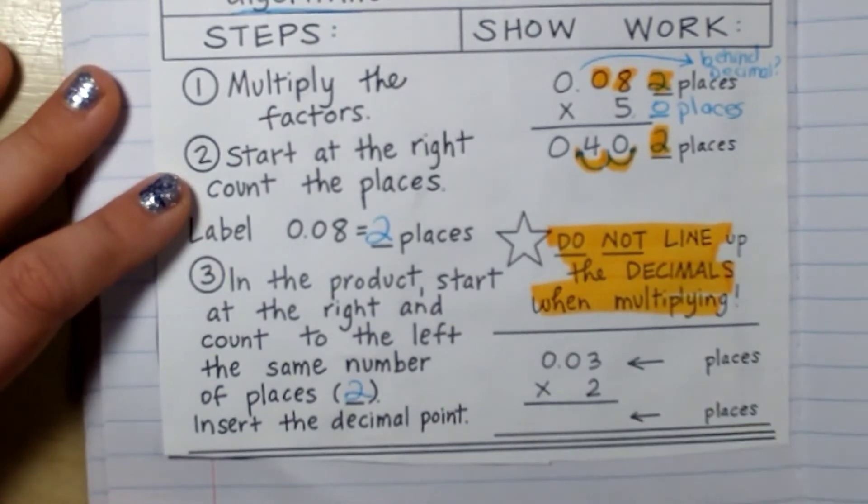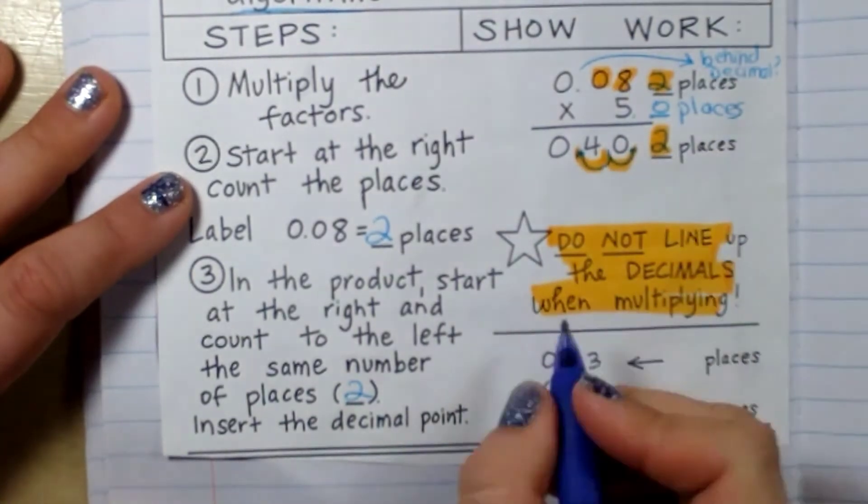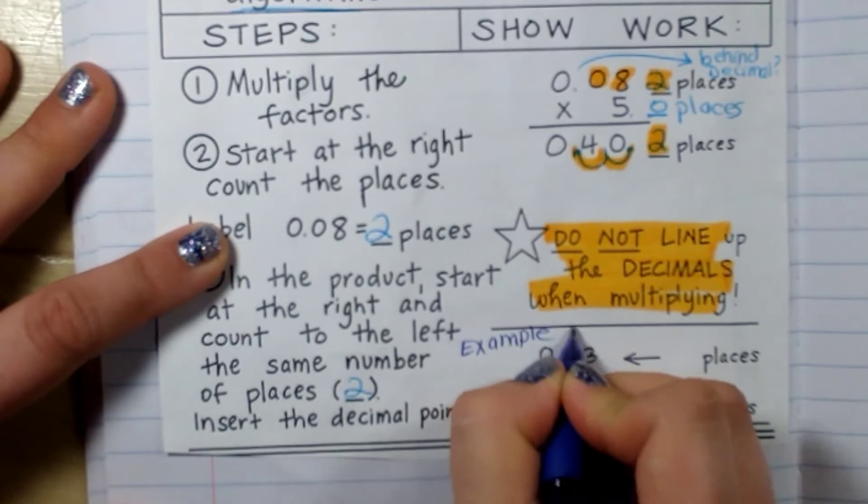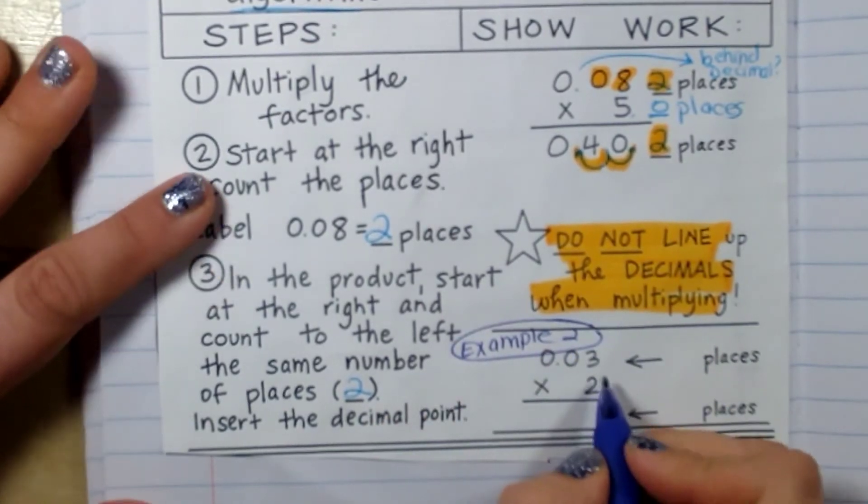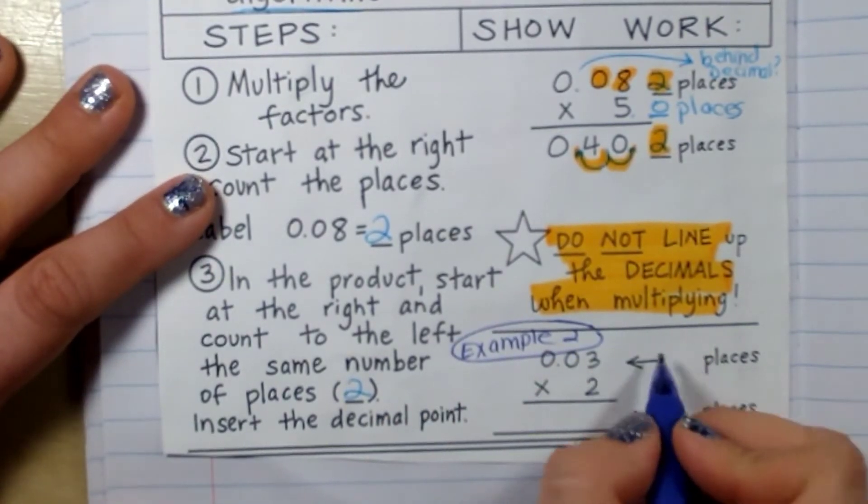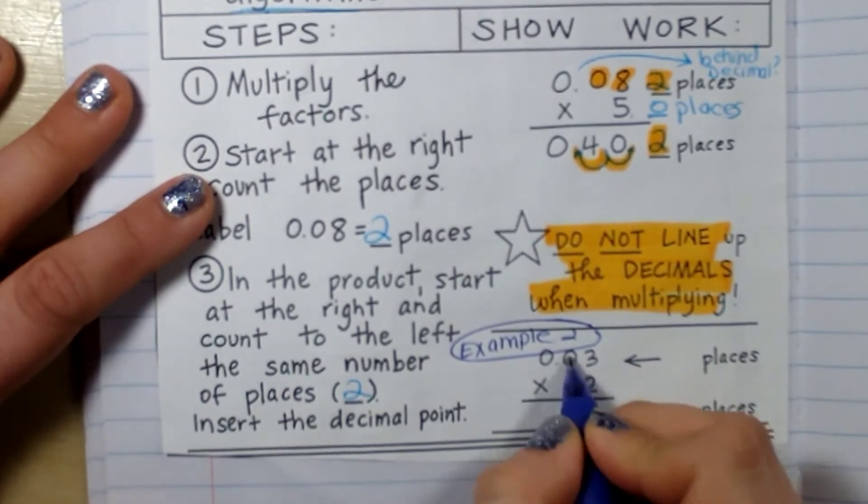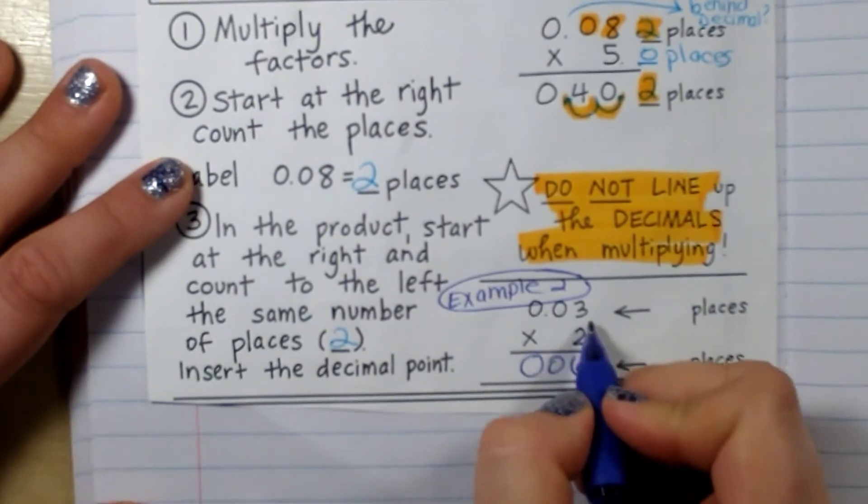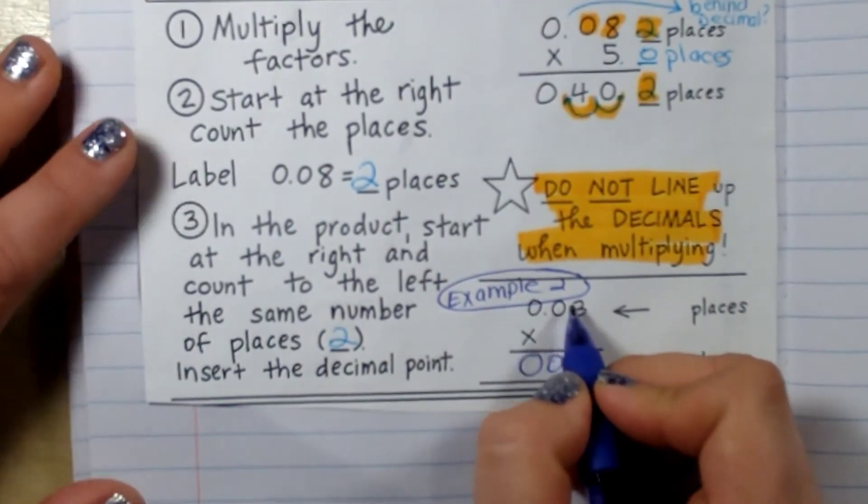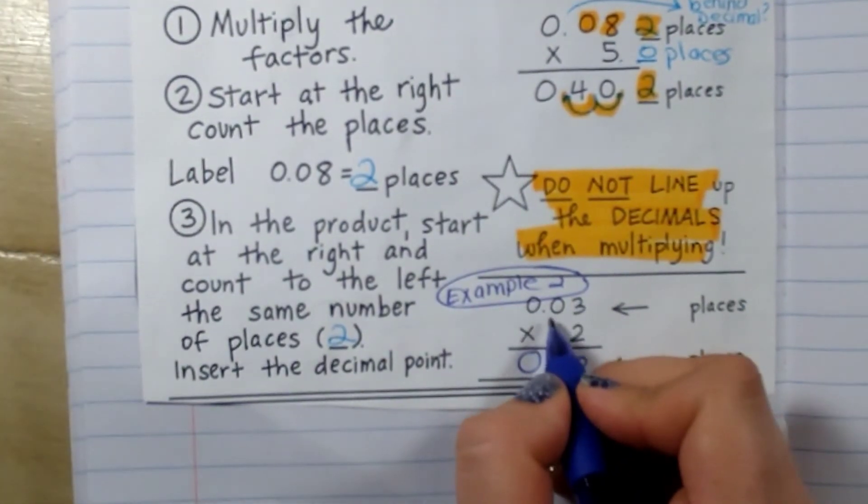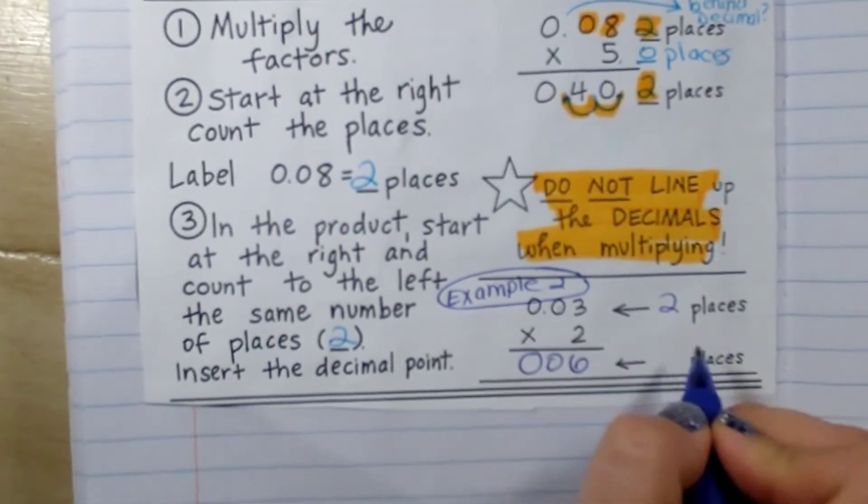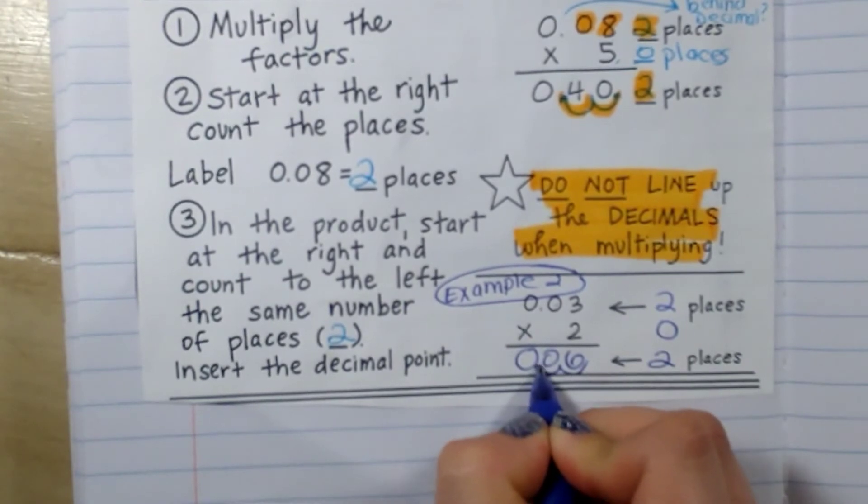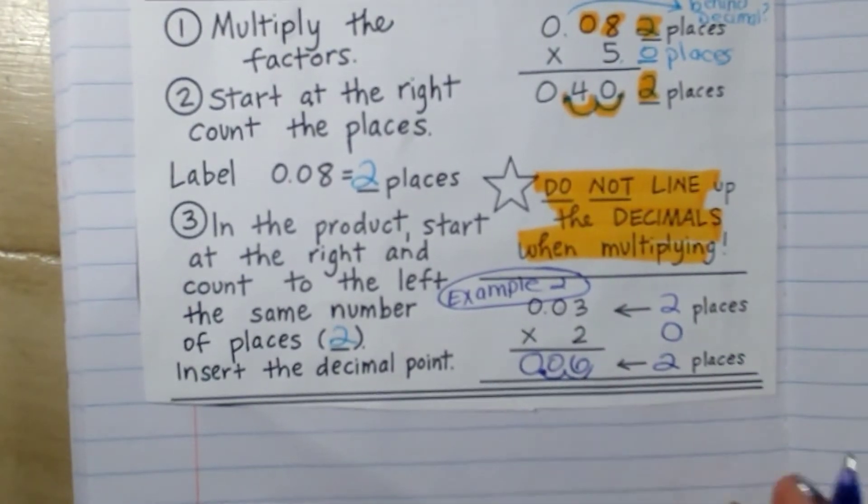So we're going to do this example here. So we're going to multiply. There are 3 times 2 is 6, 0, 0. Okay. The next thing I want to say is how many numbers are behind the decimal point? How many place values? I have 1, 2. Here I have 0. So I'm going to use 2 place values over and my answer is going to be 6 hundredths.